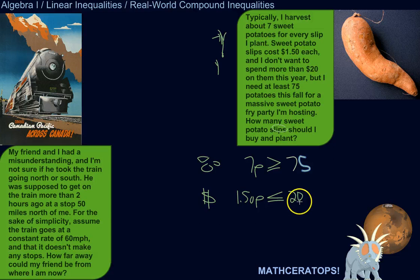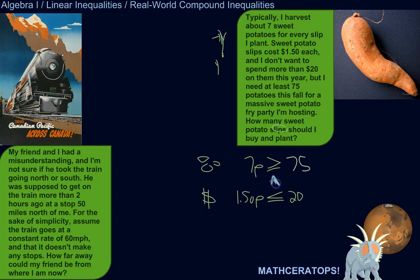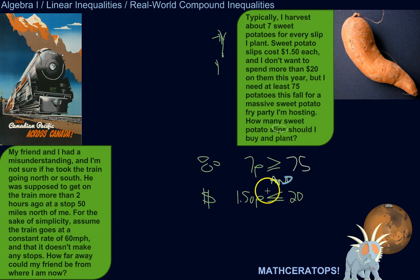No — I need both of these things to be true. I need at least 75 potatoes and I need them to cost at most $20. So this is a compound inequality joined by 'and.' I need both of these conditions to be true simultaneously.